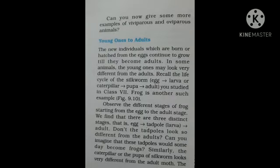Good morning children, let's continue Chapter 9: Reproduction in Animals. In the previous video we discussed viviparous and oviparous animals. Now the topic is 'young ones to adult' and we will discuss metamorphosis.